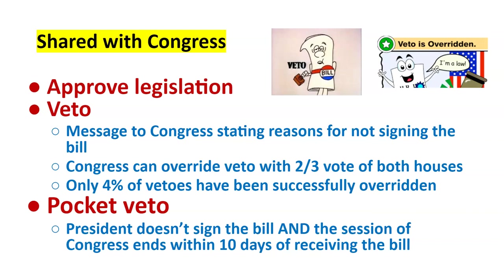The president can also veto — the power to say no. The president doesn't necessarily have to give a reason, but veto statements do have impact: 'I'm vetoing this because I think it can be a better bill.' That power of veto is influential in shaping the bill. Congress can override that veto, but only 4% of vetoes are actually overridden — 96% are never overridden. You'd need a two-thirds vote in both houses, which is a huge hurdle.